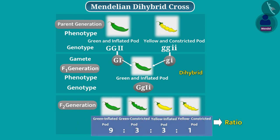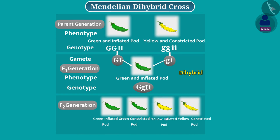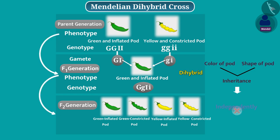This ratio is called the dihybrid ratio. Mendel found that in the parent generation, inflated pods were green in color and constricted pods were yellow in color. But in F2 generation, there were pods which were inflated but yellow in color, and similarly, there were pods which were constricted but green in color. This suggests that the inheritance of color of pod and shape of pod do not affect each other — that is, the color and shape of the pod are inherited independently. For this, the factors governing them have been segregated independently.